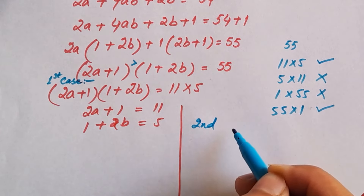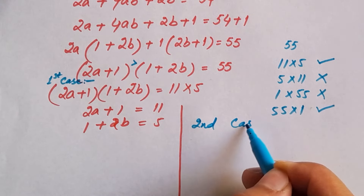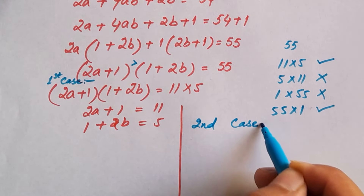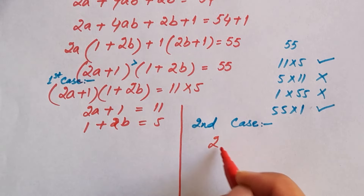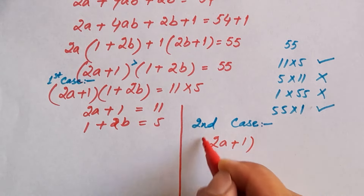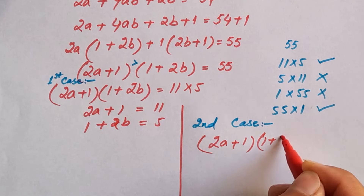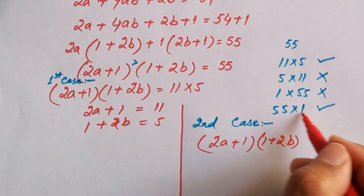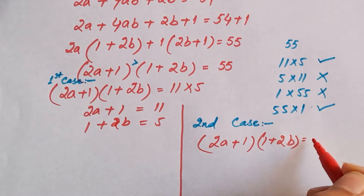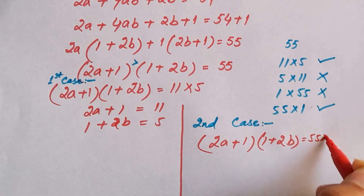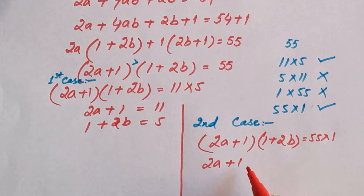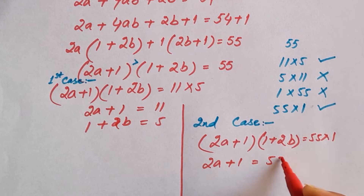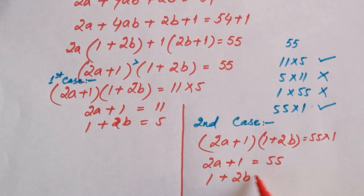The second case is (2a plus 1)(1 plus 2b) equal to 55 times 1. This means 2a plus 1 is equal to 55 and 1 plus 2b is equal to 1.